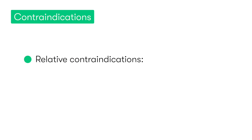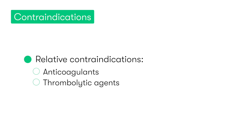Relative contraindications mainly consist of factors that can affect the patient's ability to clot, including medications such as warfarin, heparin, and thrombolytic agents, and also if the patient has a severe coagulopathy.